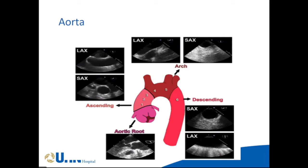Distal to the left subclavian becomes the descending thoracic aorta. Regarding traumatic aortic injury, the most common site of blunt trauma or rapid deceleration is the aortic isthmus — the segment between the distal arch and the descending thoracic aorta — because of rapid deceleration, it can give way. As per the ACA guidelines, the mid-esophageal short and long axis views and the upper esophageal long and short axis views are commonly used to image aortic structures.